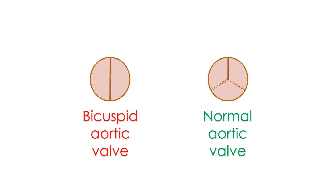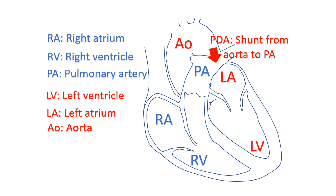Ventricular septal defect is a hole in the wall between the lower chambers of the heart. Patent ductus arteriosus is a connection between the aorta and the pulmonary artery. The pulmonary artery is the blood vessel carrying blood to the lungs for oxygenation.